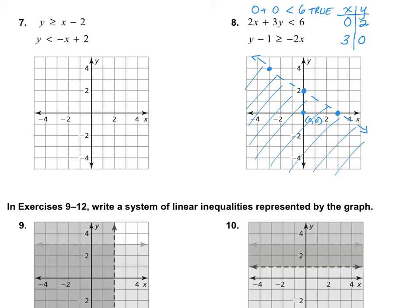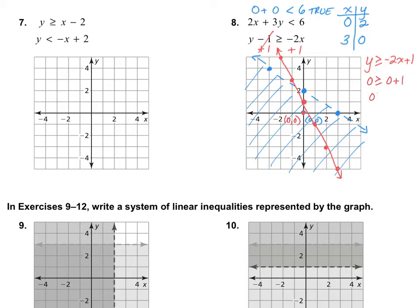The next inequality can be put into y = mx + b form by adding 1 to both sides, giving y is greater than or equal to negative 2x plus 1. My y-intercept is at 1 and slope is down 2 over 1. It's greater than or equal to, so I need a solid line. I'll plug in (0, 0): 0 greater than or equal to negative 2 times 0 plus 1 gives 0 ≥ 1 — false. So I shade away from that point. The double-shaded area is the solution.